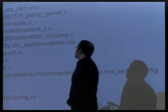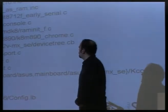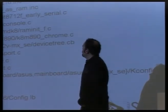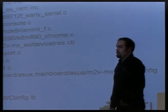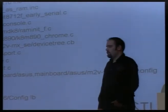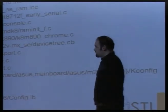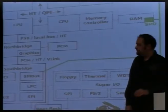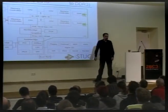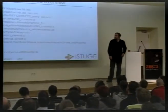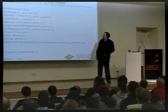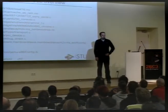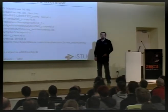The SuperIO ITE IT8712F chip — that's the SuperIO chip — has a file called IT8712F early serial.c, and it does exactly what the file name says. It enables the serial communication so that the serial port is usable from Coreboot, and then the console driver uses the serial port to start talking and helping us figure out why nothing is working.